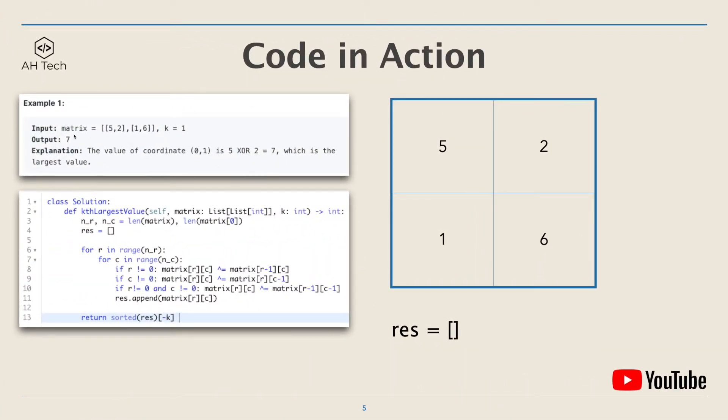Here is the input matrix: [[5, 2], [1, 6]], and they are the same for all examples. We will start to calculate the coordinate value for each cell based on the DP transition equation. The first cell 5 will still remain 5, and then we will append 5 to the res array.